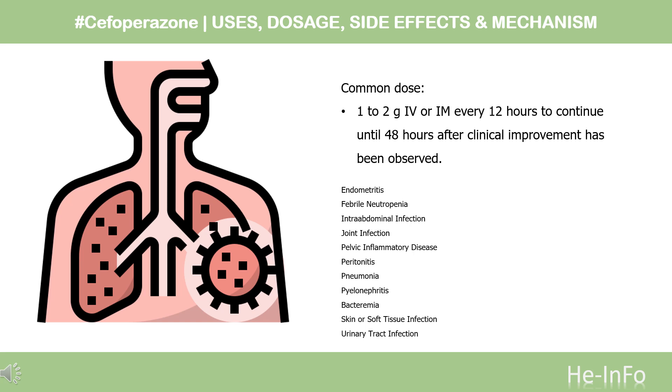Usual adult dose for urinary tract infection: 1 g IV or IM every 12 hours for 3–7 days.